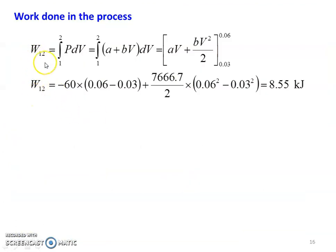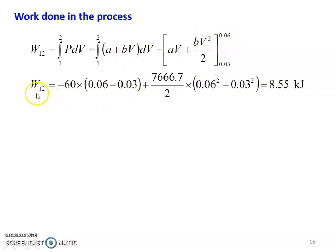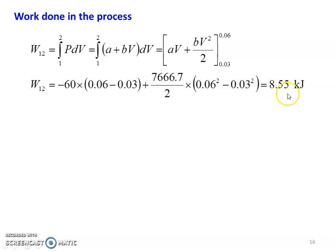Now we calculate the work done: W12 equal to integral of P dV, where P equal to A plus BV. Integrating gives AV plus BV squared by 2, with limits from 0.03 to 0.06. Substituting: W12 equal to minus 60 into (V2 minus V1), which is 0.06 minus 0.03, plus 7,666.7 divided by 2 into (0.06 squared minus 0.03 squared). This calculates to 8.55 kilojoules. So, work done in the process is 8.55 kilojoules.